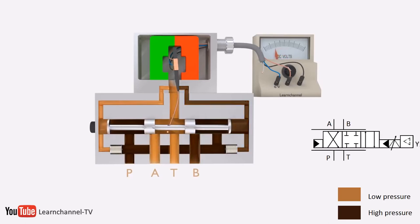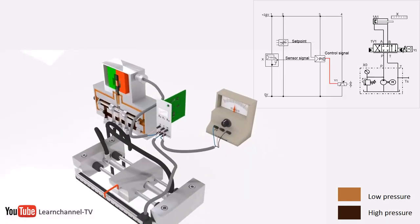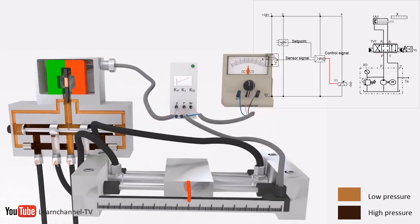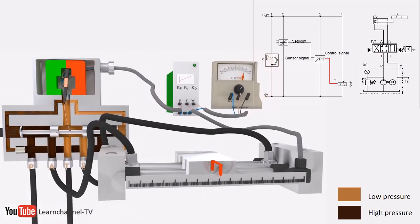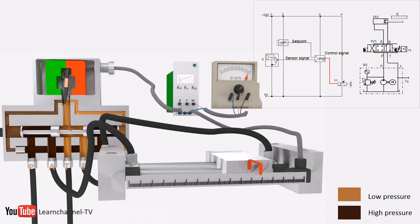To tell it in a few words, within a servo valve the electronics provides the accuracy and the hydraulics provides the force. You would use servo valves for high demanding closed-loop systems with analog actuators of course. Here you see an example of a closed-loop position control.